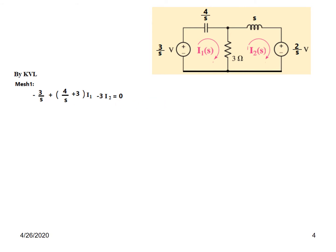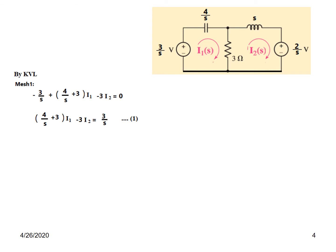I hope you know how to write the mesh equation. Arranging the terms, this is the term for I1, this is I2, and this is the constant term. This is our equation number 1 for mesh 1. Similarly, we write for mesh 2: 3 plus S times I2, minus 3 I1, and the constant 2 over S. Arranging the terms gives us the final equation for mesh 2.